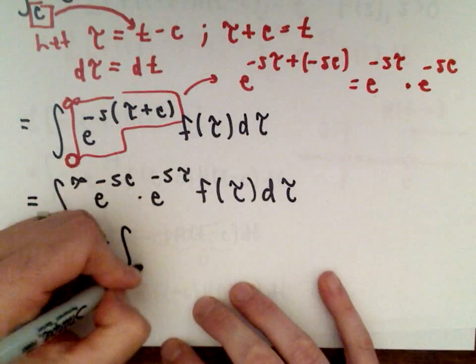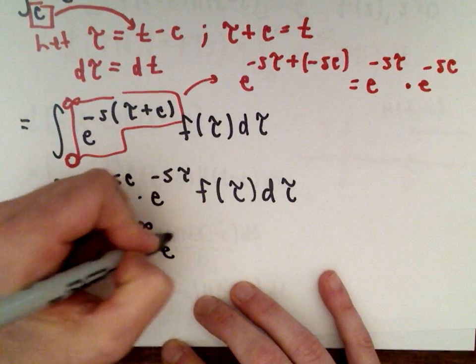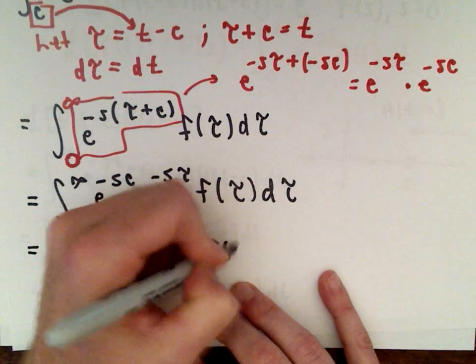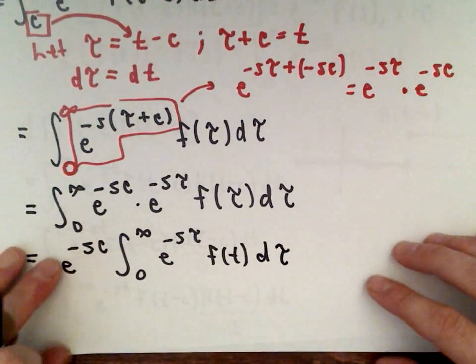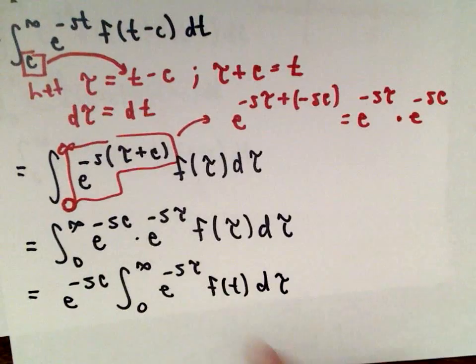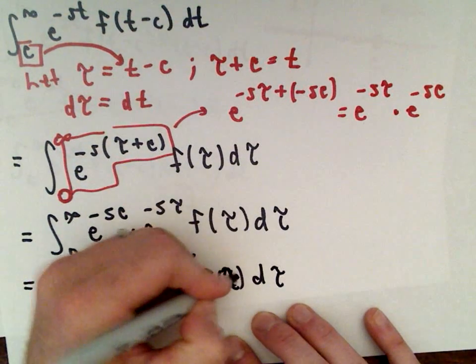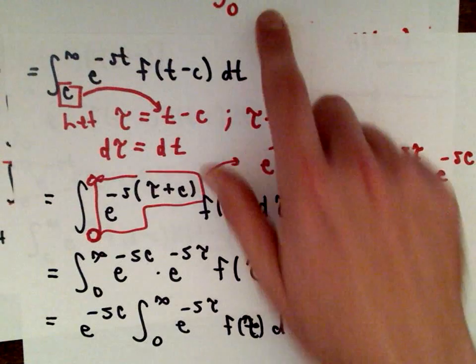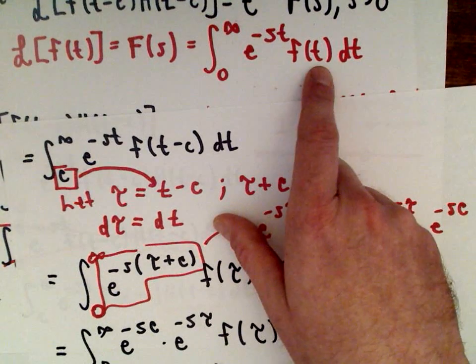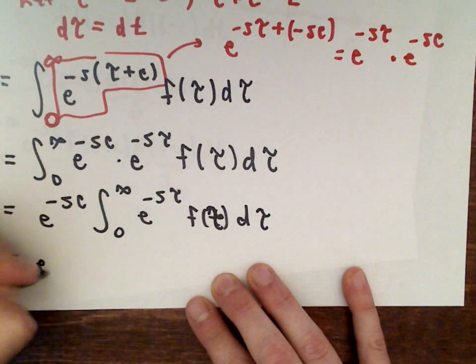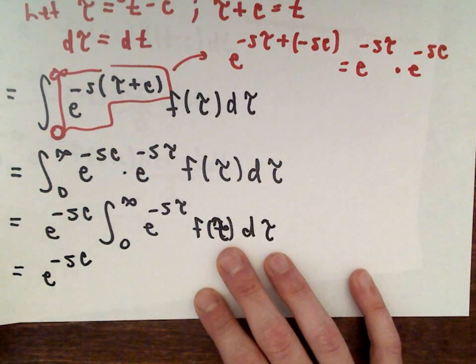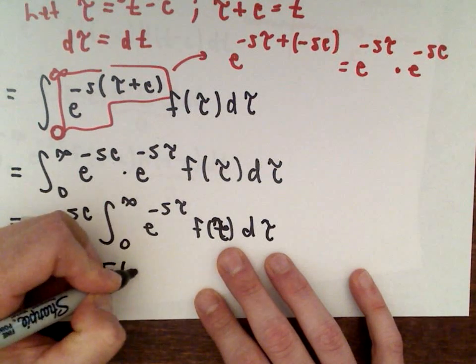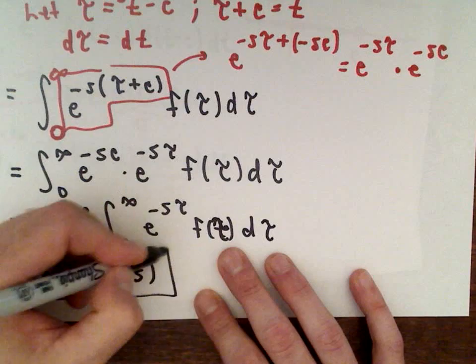We can pull the constant e to the negative s·c out front, leaving the integral from zero to infinity of e to the negative s·τ times f(τ) dτ. Since τ is just a dummy variable, this integral is exactly the Laplace transform F(s). So we get e to the negative s·c times F(s), which completes the proof.